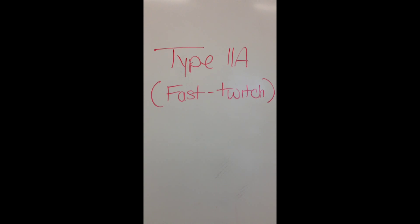For glycolysis, there is type 2A fast twitch muscle fiber. Type 2A is an intermediate type of muscle fiber which allows for high speed energy release.